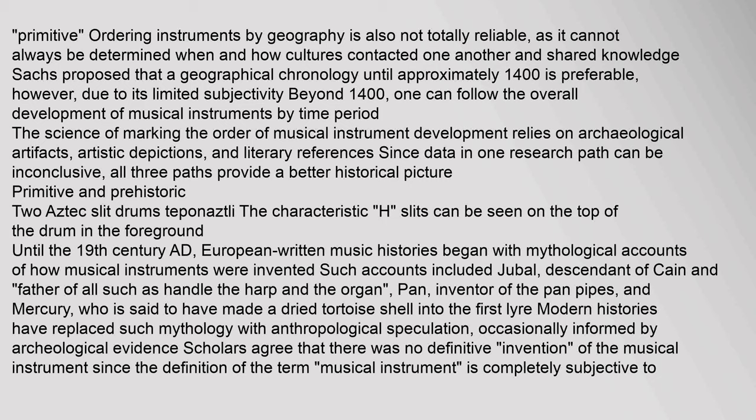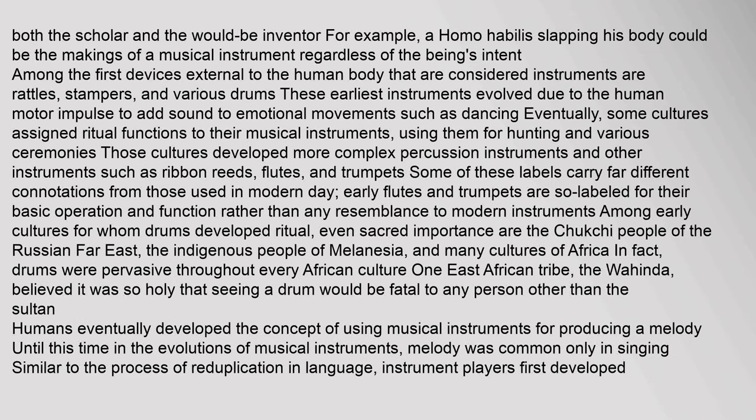Until the 19th century AD, European written music histories began with mythological accounts of how musical instruments were invented. Such accounts included Jubal, descendant of Cain and father of all such as handle the harp and the organ; Pan, inventor of the Pan pipes; and Mercury, who is said to have made a dried tortoise shell into the first lyre. Modern histories have replaced such mythology with anthropological speculation, occasionally informed by archaeological evidence. Scholars agree that there was no definitive invention of the musical instrument since the definition is completely subjective.